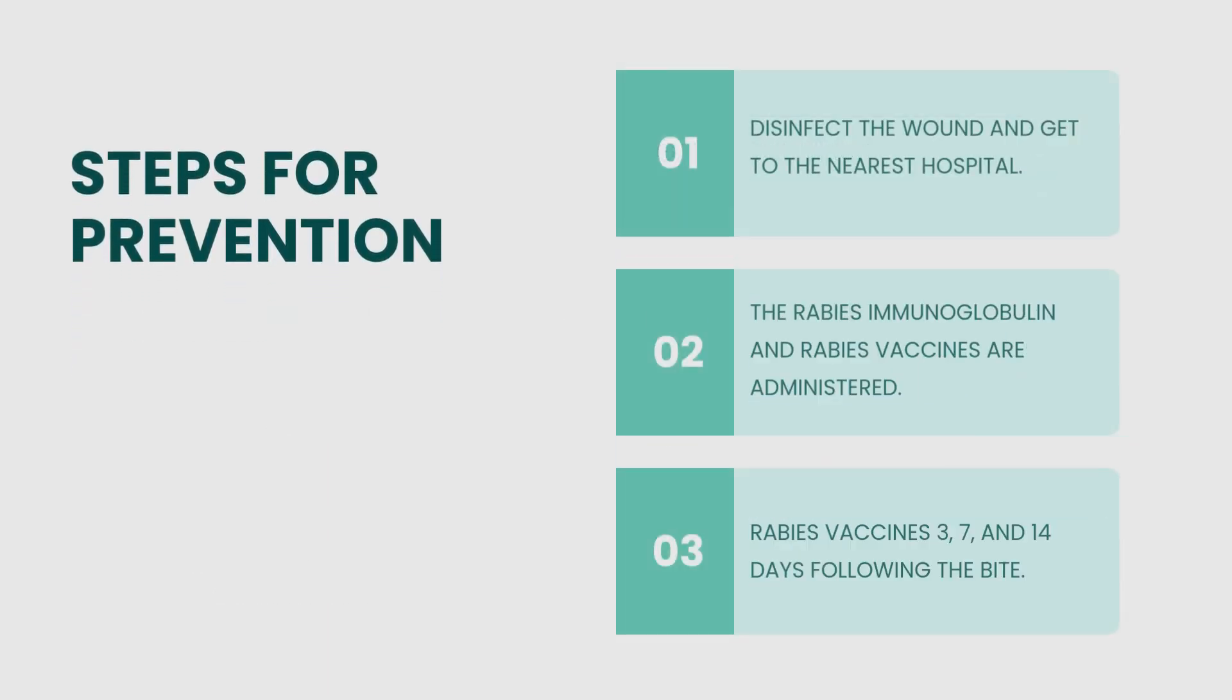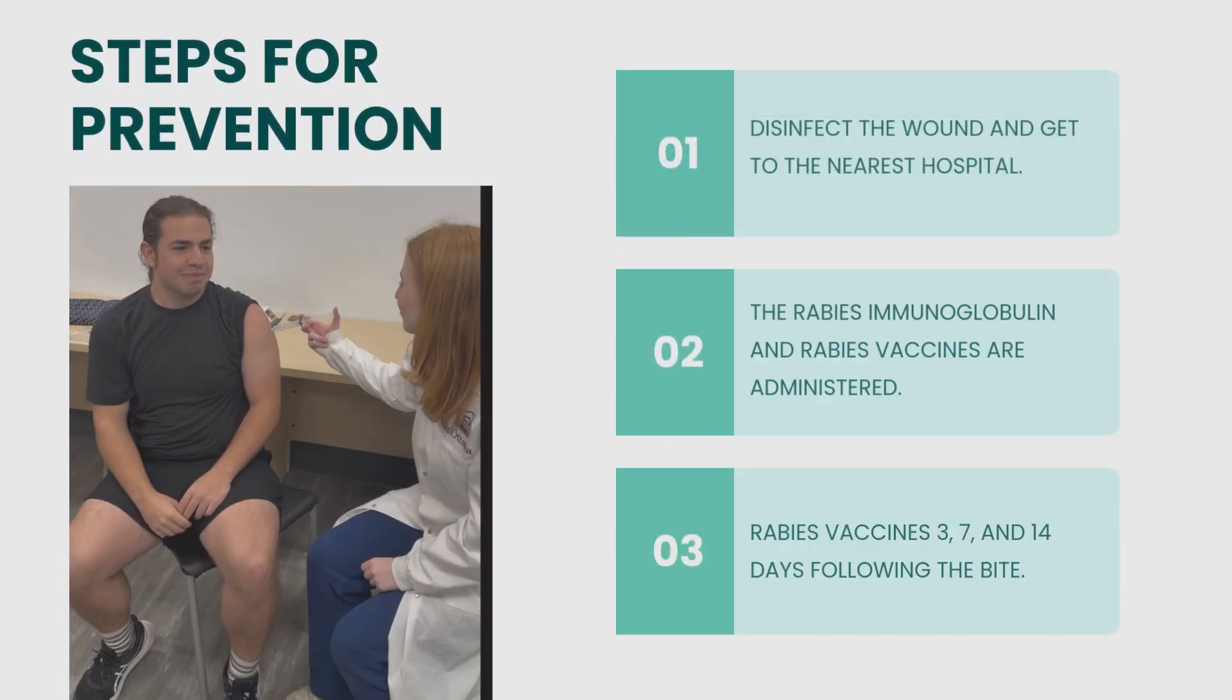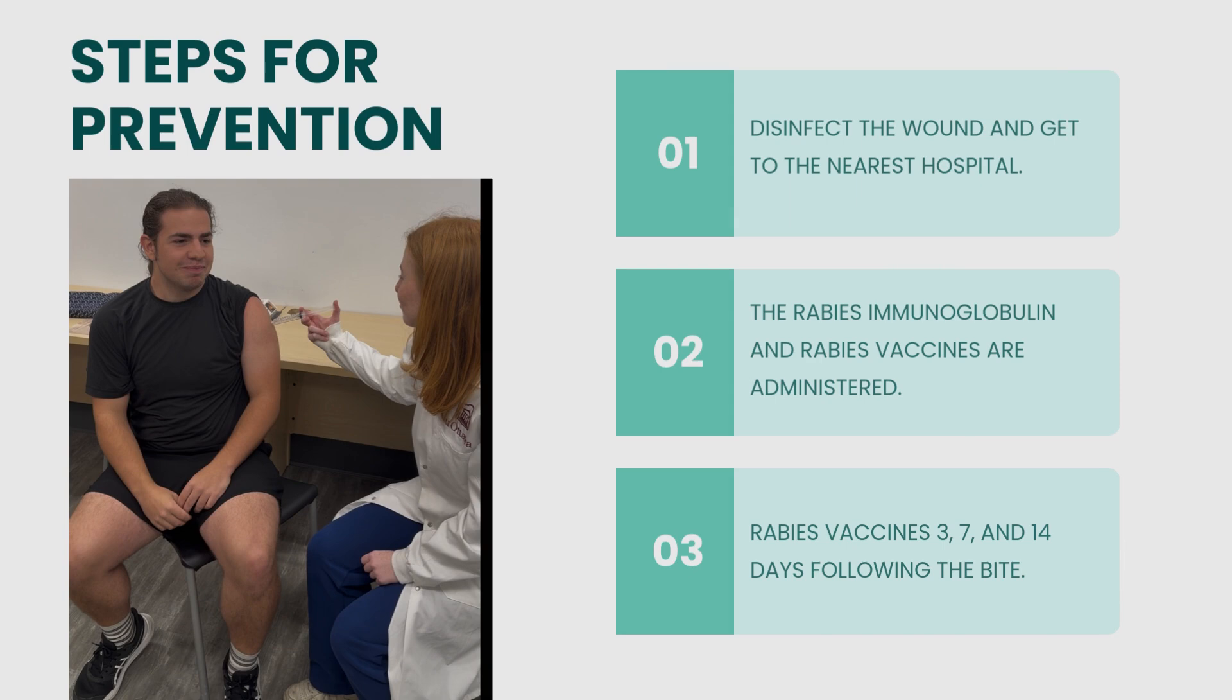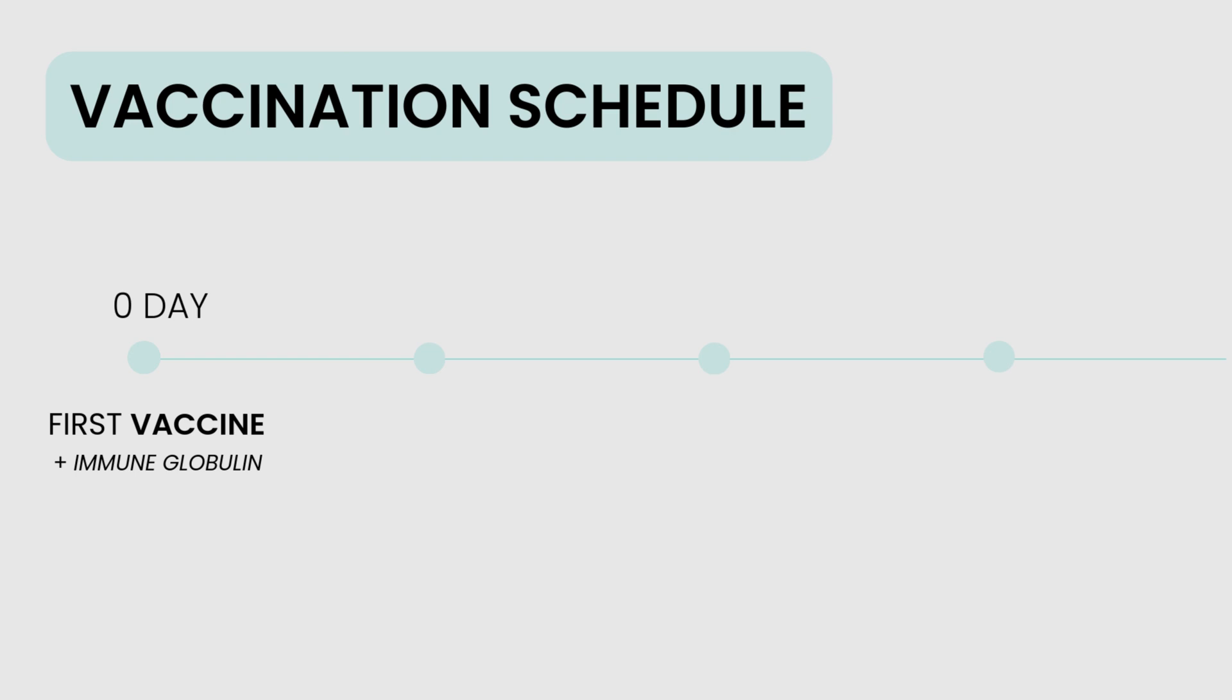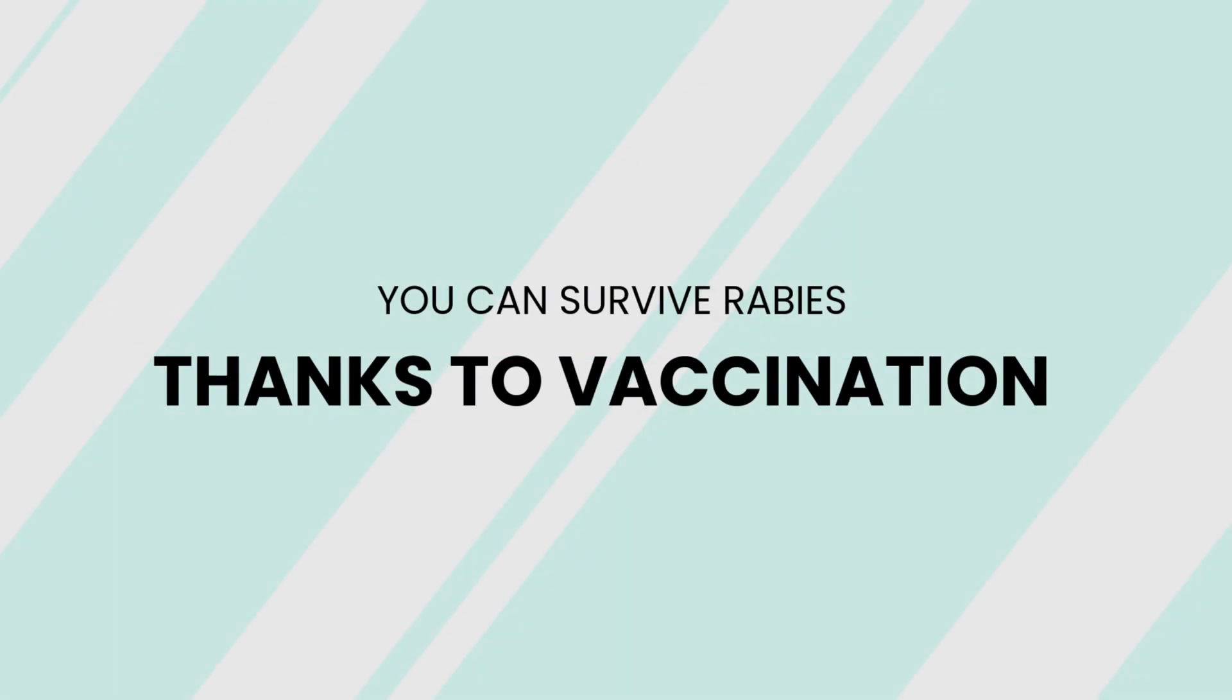The patient should disinfect the bite wound immediately and proceed to hospital, where they will be given rabies immune globulin and rabies vaccination. Multiple injections are required and determined by weight. Public health will follow up 3, 7, and 14 days post-exposure to administer 3 additional rabies shots. Thanks to vaccination, you can survive a rabies infection without even knowing you had it.